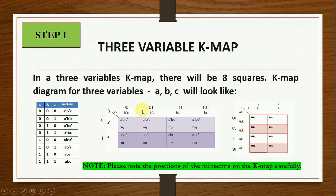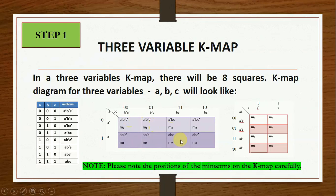In Gray code, each successive number differs only in one place — we change only one term from direct to complement or complement to direct. So the columns are B-bar C-bar, B-bar C, BC, and BC-bar. The cell minterms at the intersection of rows and columns are: M0 (A-bar B-bar C-bar), M1 (A-bar B-bar C), M2 (A-bar BC), M3 (A-bar BC-bar), M4 (A B-bar C-bar), M5 (A B-bar C), M6 (A BC), M7 (A BC-bar). Look at the position of minterms very carefully — if you place them wrongly, your KMAP will be wrong.